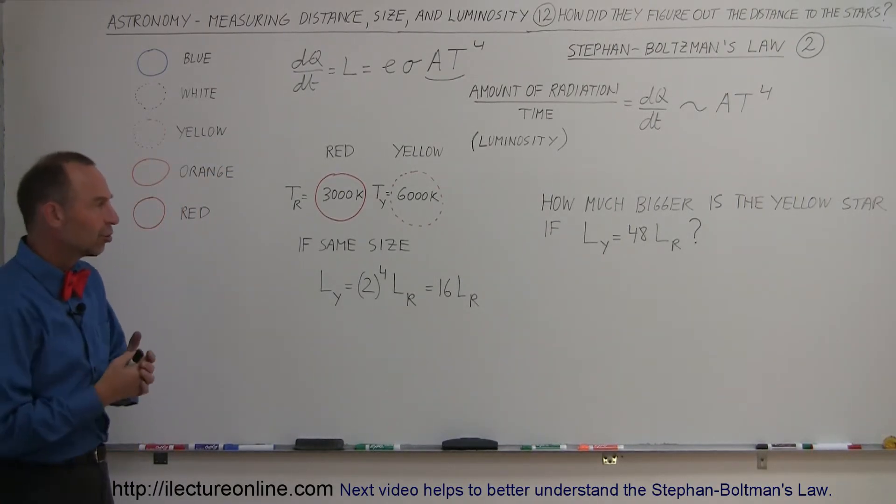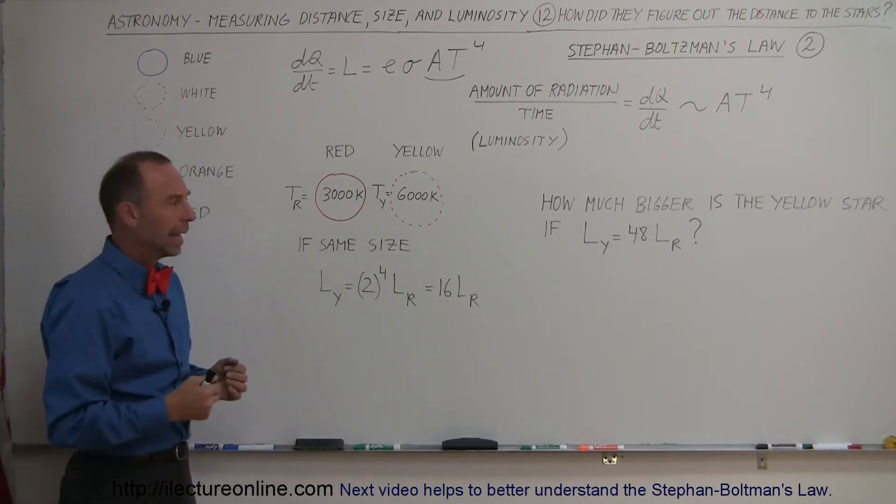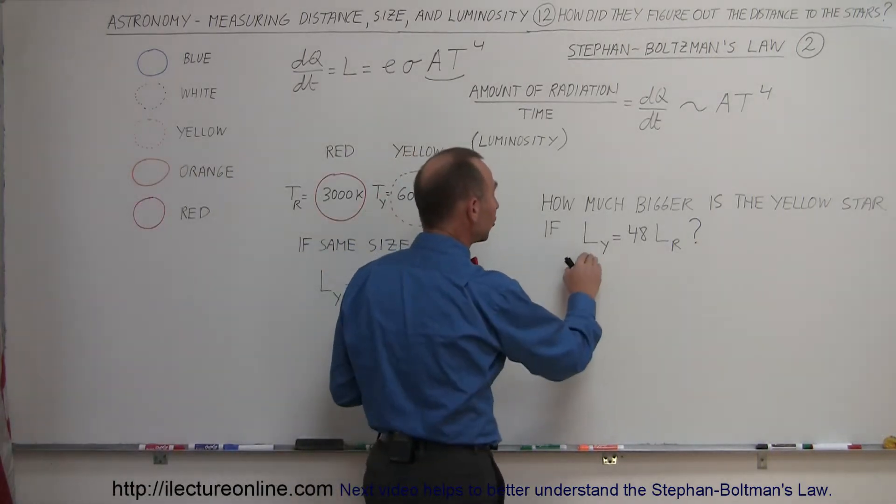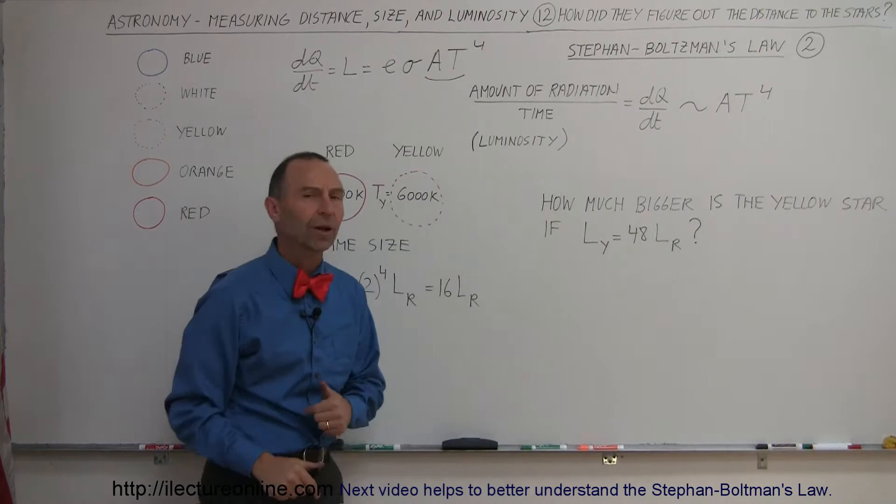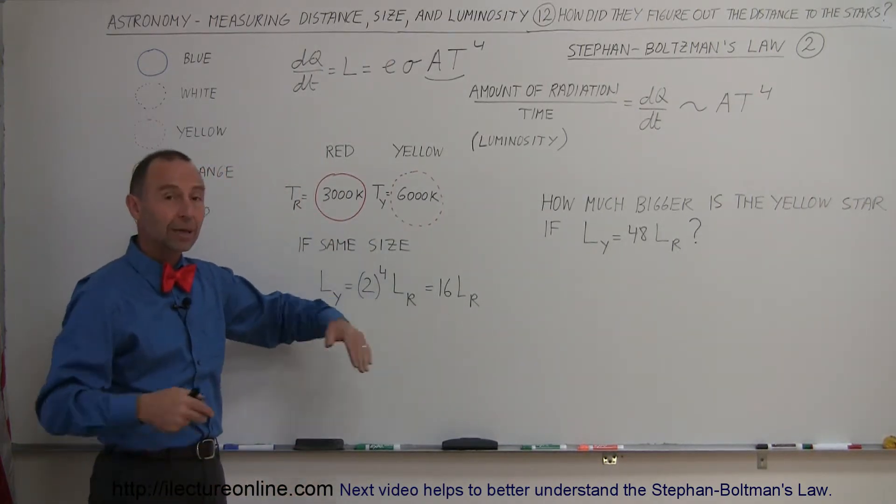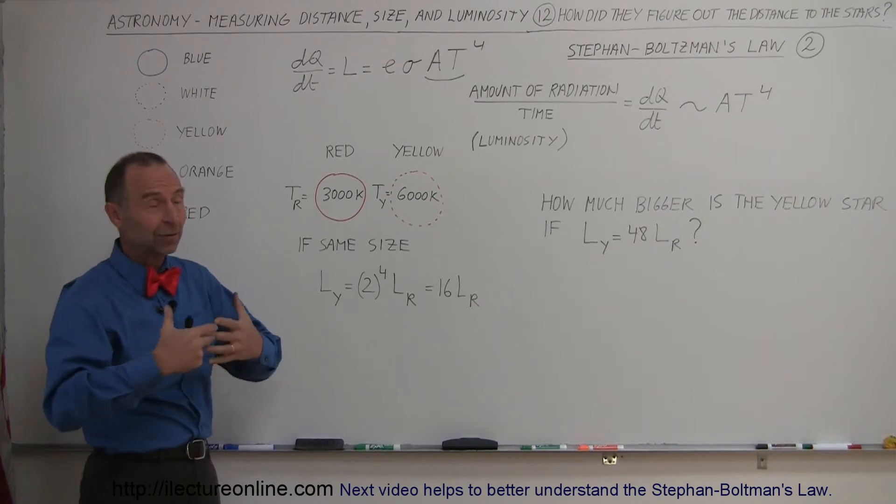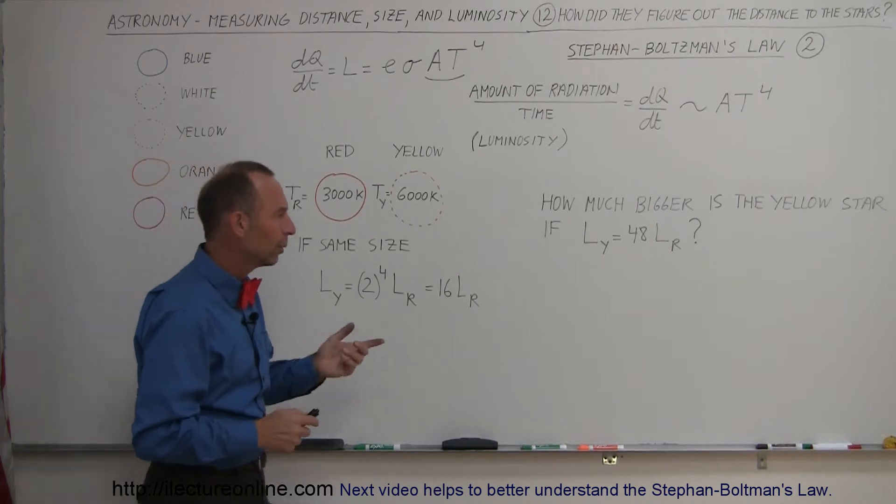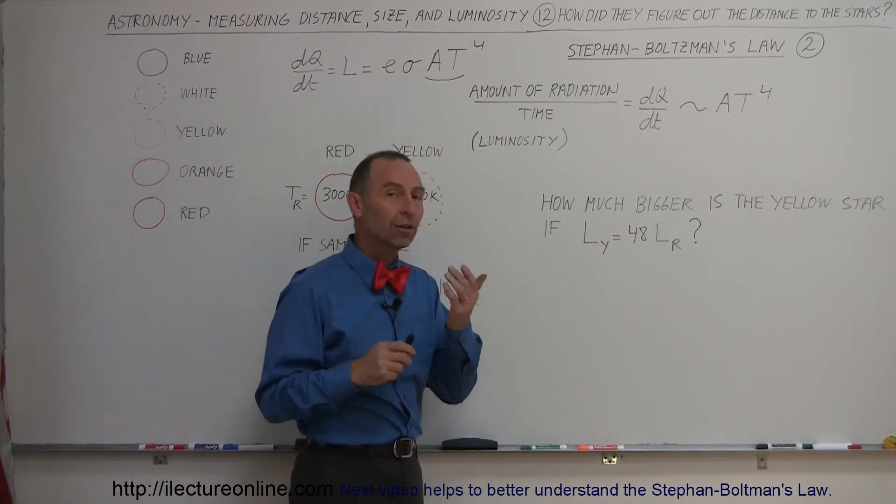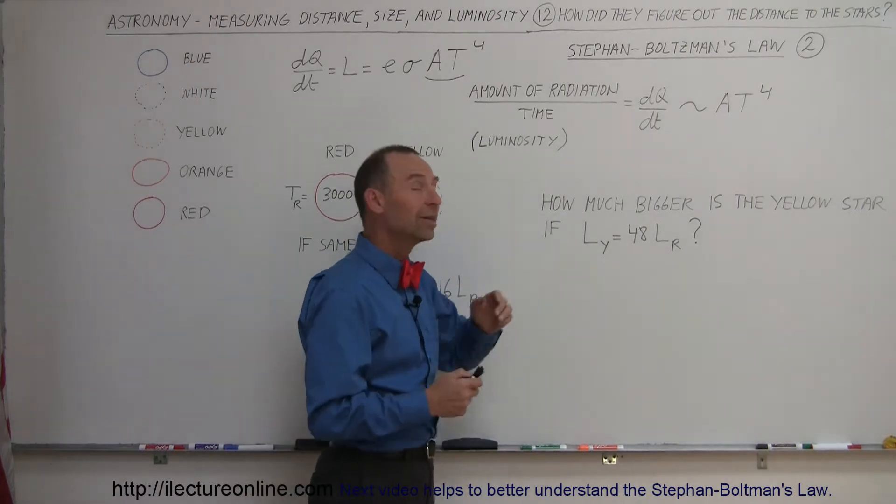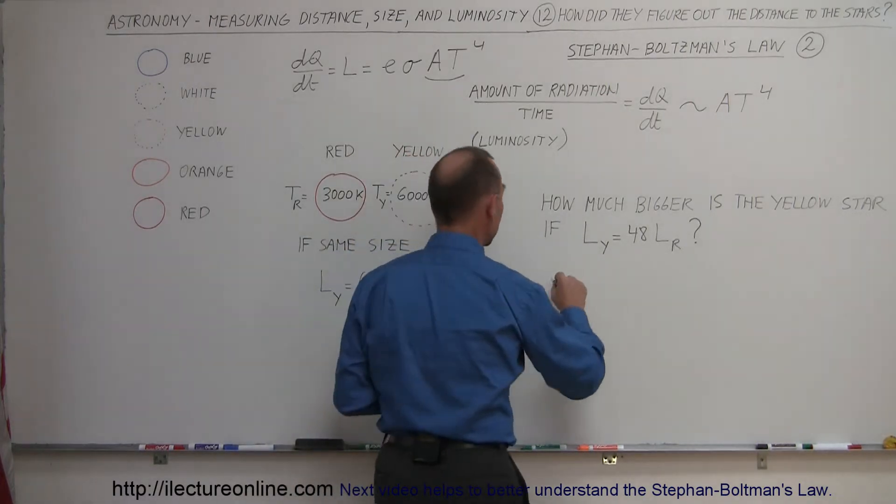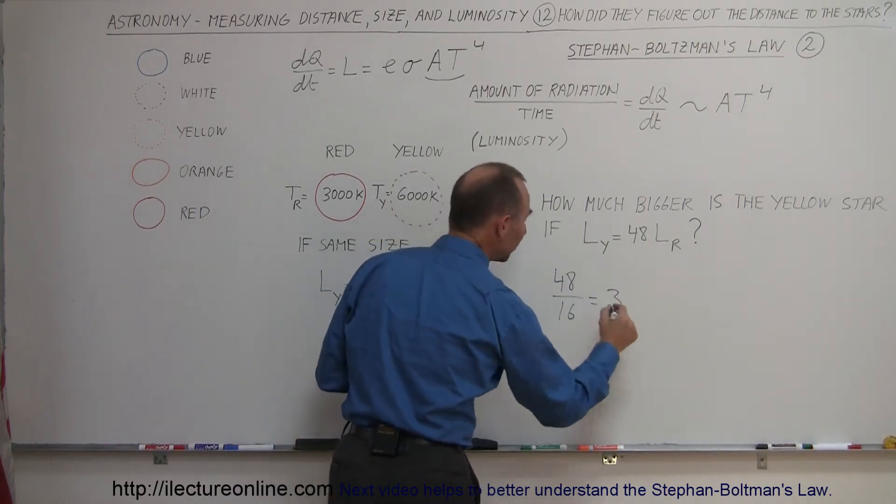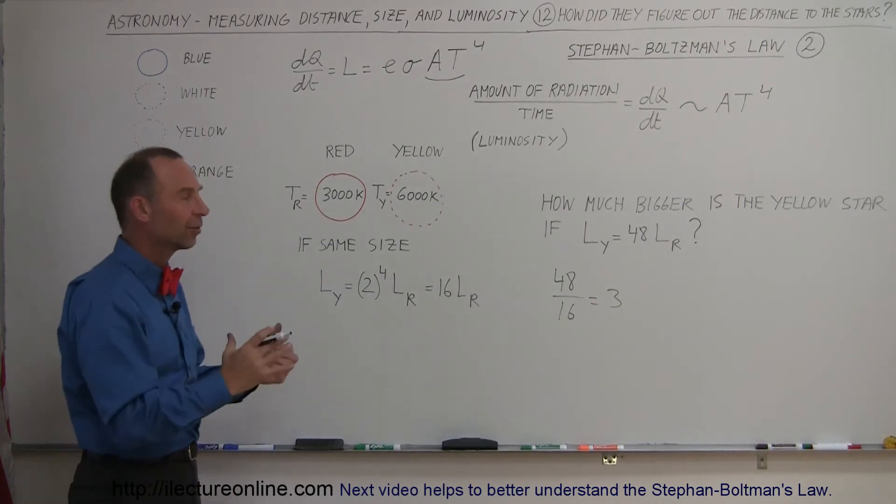But what if we understand that the yellow star will be bigger and we want to know how much bigger? Well, let's say that in our example the yellow star actually is 48 times as bright as the red star. So only 16 times as bright can be accounted for by the extra temperature. That means if it's even brighter than that, it must also be bigger. And the question is how much bigger? Well we can see then that the increase in luminosity due to the increase in size would be three times. So if we take 48 and divide it by 16, that is three times as bright due to the size of the star.